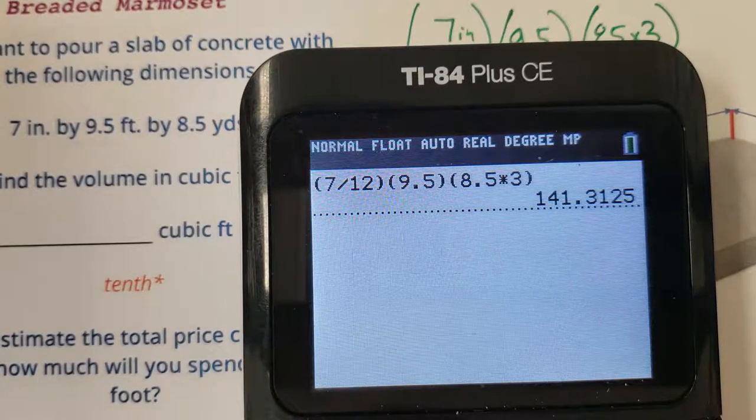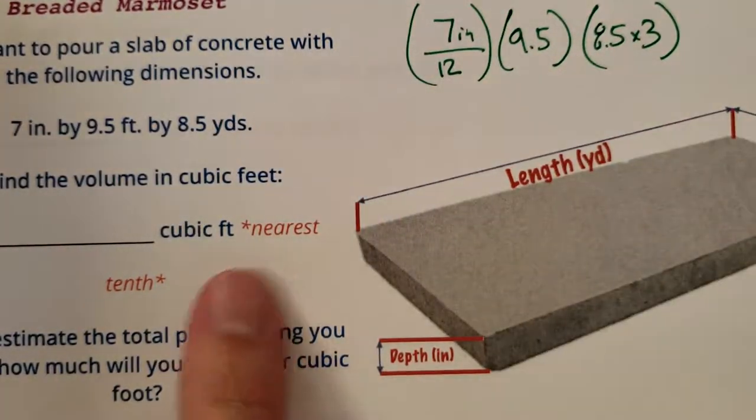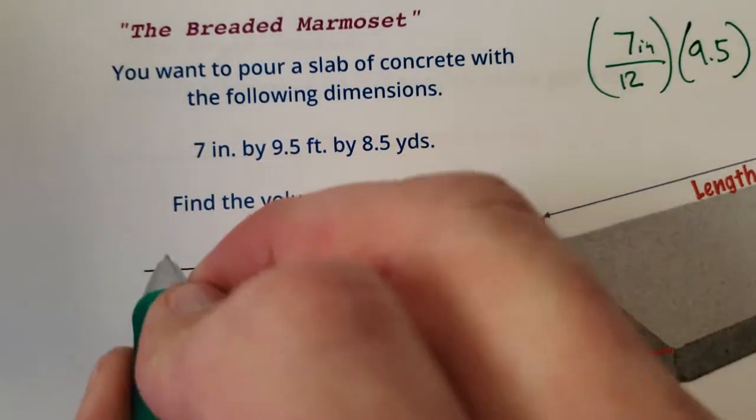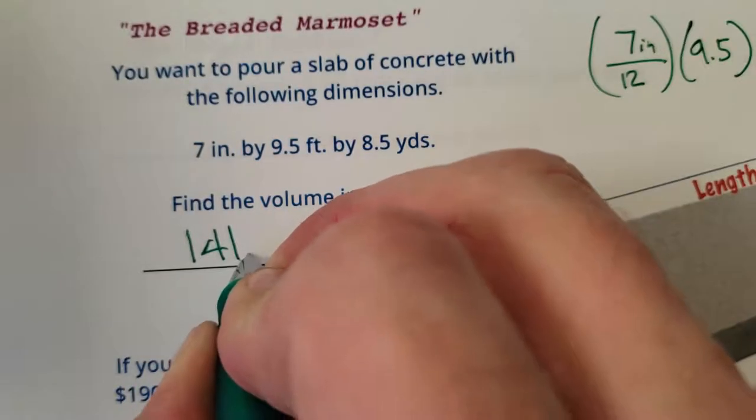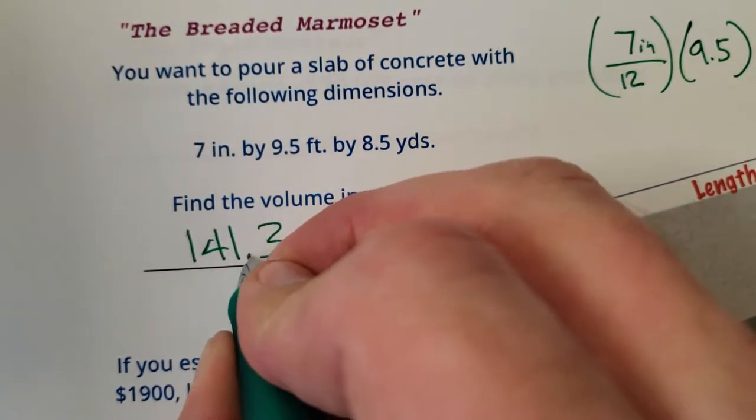We've got 141.3. It says nearest tenth. Okay, cubic feet 141.3. All right.